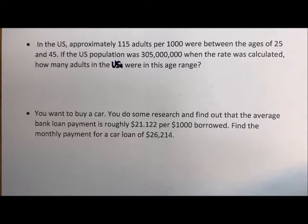Okay, in the US approximately 115 adults per a thousand were between the ages of 25 and 45. If the population of the US that year was approximately 305 million when the rate was calculated, how many adults that year were in this age range?